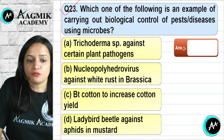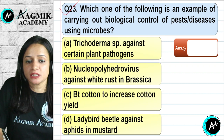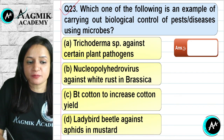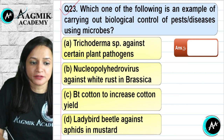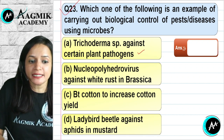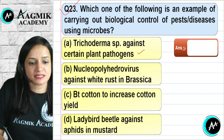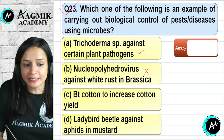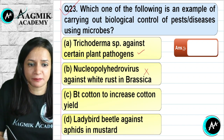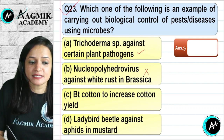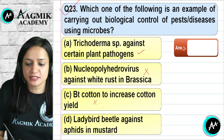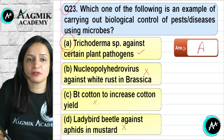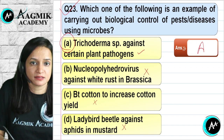Question number 23: Which is an example of biological control of pests and diseases using microbes? Trichoderma species against certain plant pathogens is correct. Nucleopolyhedrovirus is not used against white rust in Brassica. BT cotton is not biological control. Ladybird beetle is not used against aphids in mustard in this context. The correct option is A — Trichoderma species against plant pathogens.